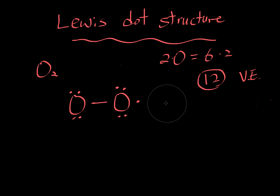So how do we handle this? Take away one electron from each side and make a double bond. Now we have 12 electrons total: one, two, three, four, five, six, seven, eight, nine, ten, eleven, twelve — correct. Check the octet rule on the left oxygen: one, two, three, four, five, six, seven, eight — satisfied. Right oxygen: one, two, three, four, five, six, seven, eight — that one's happy too. So this is the Lewis dot structure for oxygen gas.